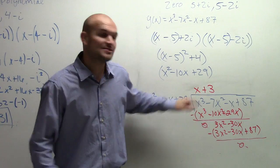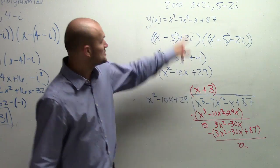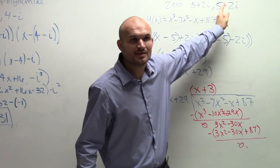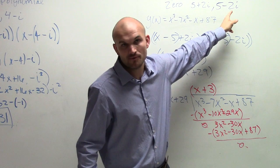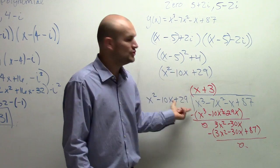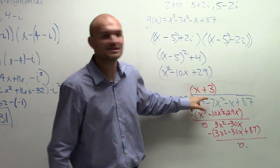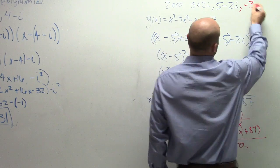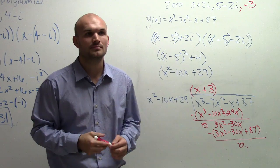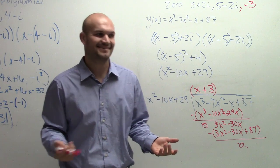So therefore, my last remaining factor is x plus 3. If this is a zero, that means negative 3 is a zero. We multiplied the conjugate pair, used long division, and figured out the last factor, proving that's a zero as well. Pretty awesome!